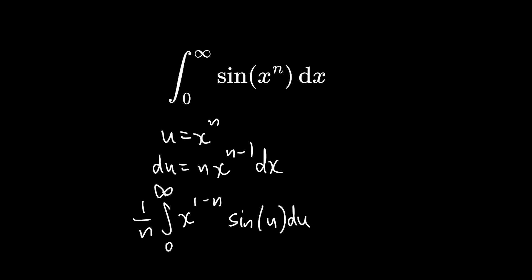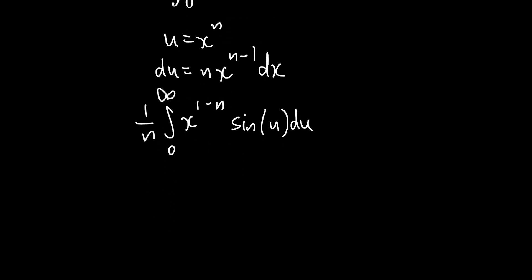To finish our substitution off, we're going to want to write x to the power of 1 minus n in terms of u. So I'm going to say x to the 1 is the same as u to the power of 1 over n, so the x to the minus n is just u to the power of minus 1. So if we multiply those together, integral 0 to infinity, u to the power of 1 over n minus 1 times sine of u du.